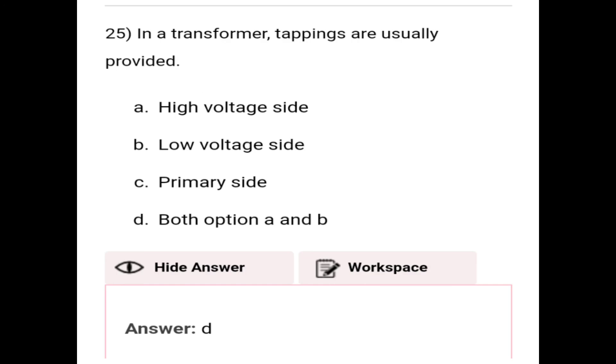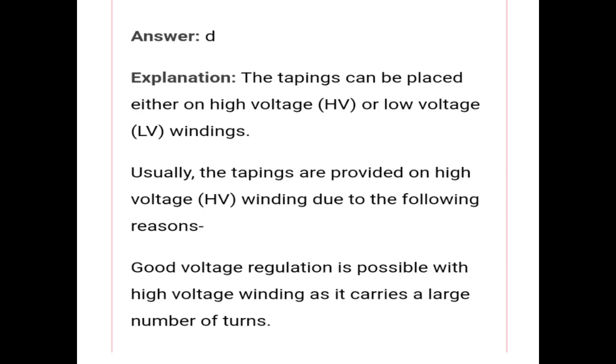Next question: In a transformer, tappings are usually provided on high voltage side, low voltage side, primary side, or both A and B. The correct answer is option D, that is A and B, meaning high voltage side and low voltage side. The explanation is that the tappings can be placed either on high voltage or low voltage winding. Usually the tappings are provided on high voltage winding due to the following reasons: good voltage regulation is possible with high voltage winding as it carries a large number of turns.